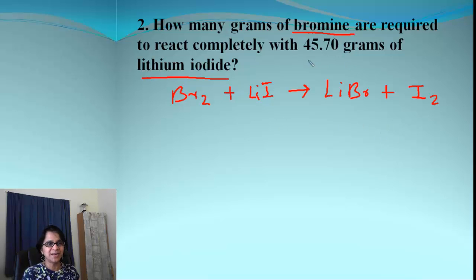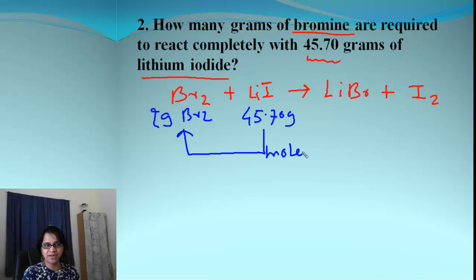Alright, where is the beginning point? The beginning point is 45.70 grams of lithium iodide. And what is the endpoint? Endpoint is grams of bromine. So we need to go to grams of bromine here. That means our roadmap goes from lithium iodide to bromine.